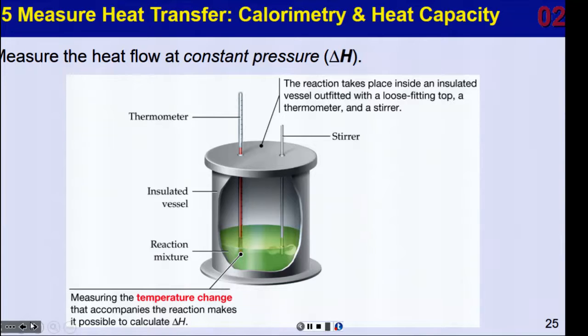So when are we going to use this? One example is doing some calorimetry, where we're measuring heat flow at a constant pressure. If you're doing it at a constant pressure, that means that you're doing it inside of an insulated vessel, and we have constant pressure. It's like it's open to the air, and it's going to have a loose top, a thermometer, a stirrer. And so the temperature change that is measured here is going to help us determine and calculate the value of delta H.